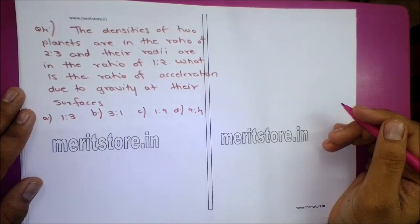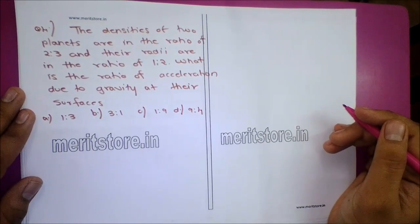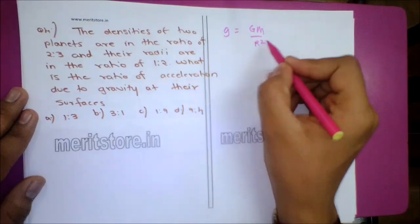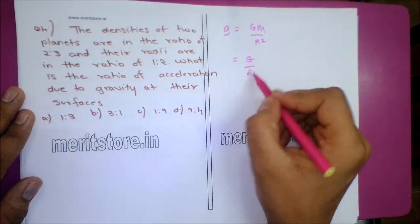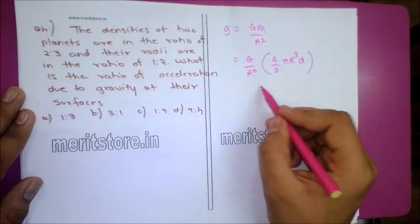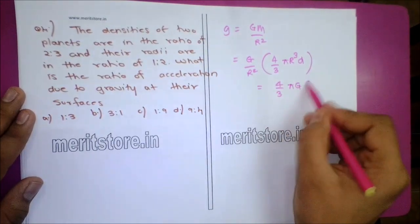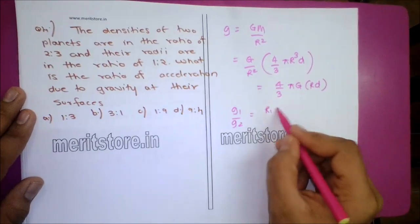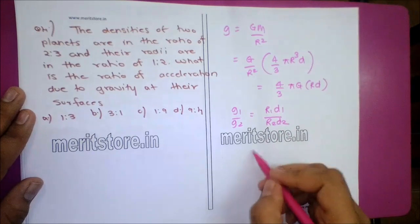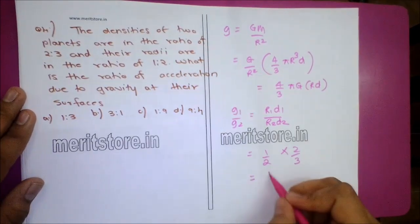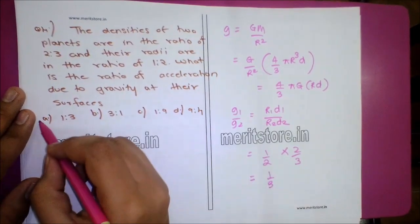Question 4: The densities of two planets are in the ratio 2:3 and their radii are in the ratio 1:2. What is the ratio of acceleration due to gravity at their surfaces? We know g = Gm/R² = (4/3)πGRD. So G1/G2 = R1D1/(R2D2) = (1/2) × (2/3) = 1/3. The ratio is 1:3. Option A is the correct answer.